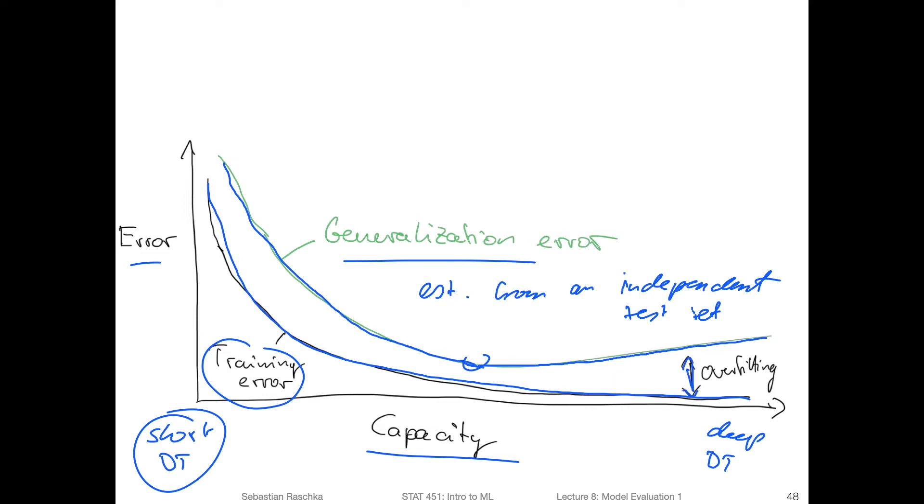And the gap, in general the gap between the training error and the generalization error, that is considered as the degree of overfitting. So it's by how much the model overfits. And in this region the overfitting is increasing, the gap is increasing, because the model fits the data too closely. It fits noise in the data, for example, and then it won't be able to generalize well to new data.